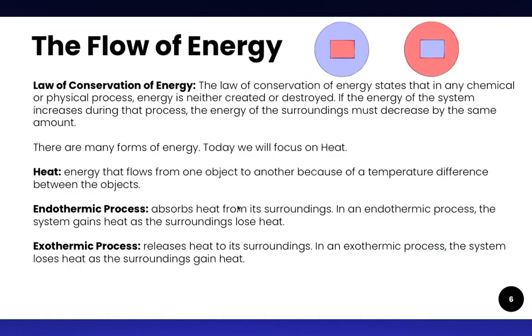So now let's talk about how substances change from one state to another. To talk about that we're going to have to first talk about the law of conservation of energy. The law of conservation of energy states that in any chemical or physical process energy is neither created nor destroyed. If the energy of the system increases during that process the energy of the surroundings must decrease by the same amount. So the energy of the universe is constant. Now there are many forms of energy that the law of conservation of energy applies to but today we're going to focus on heat.